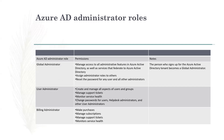Azure Active Directory administrator roles. There are three roles: Global Administrator, User Administrator, and Billing Administrator. Global Administrator can manage access to all administrative features in Azure Active Directory, as well as services that federate to Azure AD, assign administrator roles to others, and reset passwords for any user and all other administrators. User Administrator can create and manage all aspects of users and groups, manage support tickets, monitor service health, and reset passwords for users, help desk administrators, and other user admins. Billing Administrator can make purchases, manage subscriptions, manage support tickets, and monitor service health.